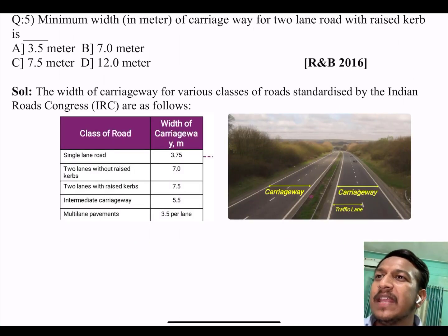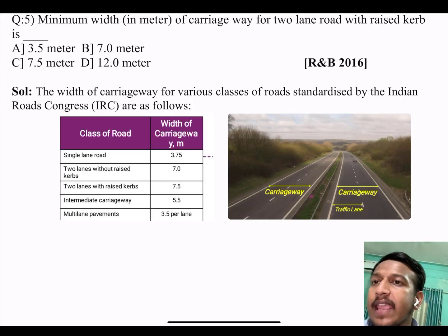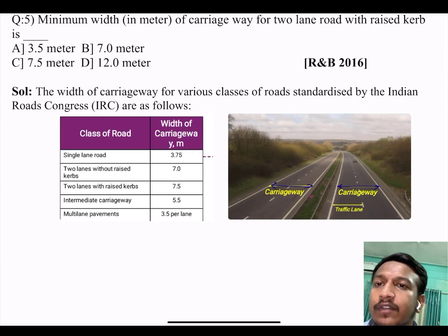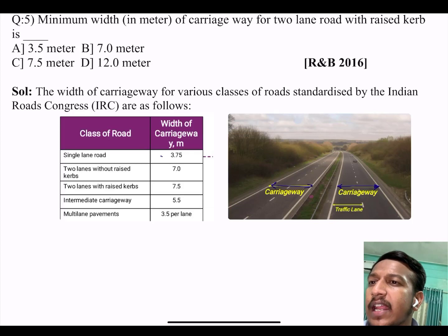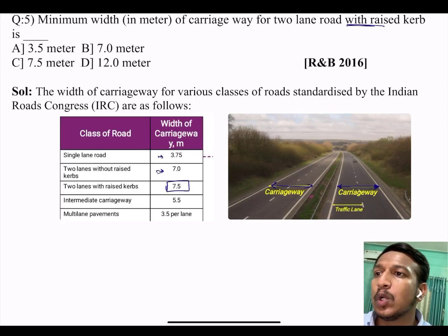Question 5: Minimum width in meter of carriageway for two lane road with raised kerb. This was asked in R&B 2016. The width of the carriageway for various classes of the road according to IRC: single lane road is 3.75 meter, 2 lane without raised kerb is 7. But the question asks with raised kerb. 2 lane with raised kerb is 7.5 meter. Intermediate carriageway is 5.5.